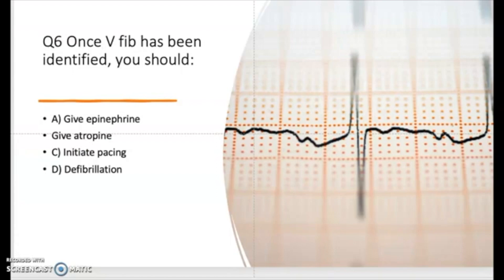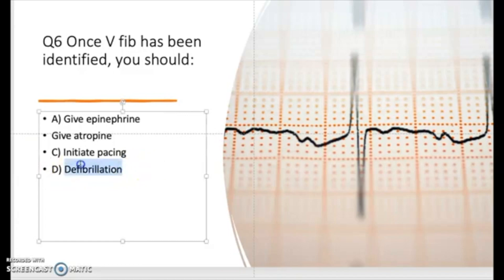Question six: once V-fib has been identified, what should you do? A) Give epinephrine, B) give atropine, C) initiate pacing, or D) defibrillate your patient. Once V-fib is identified, what is your intervention as a nurse? Take a moment — the correct answer is D, defibrillation. That is the correct answer for this question.